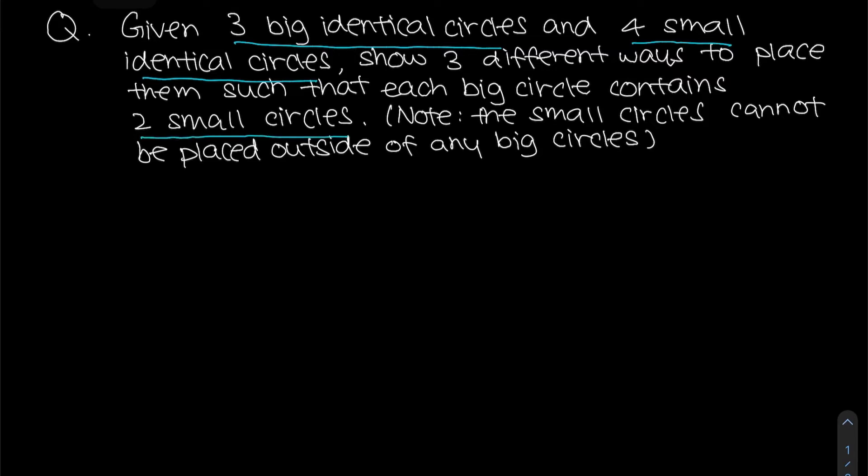So if you were to think about it normally, if let's say I have three circles like that, for example, and each of them have two small circles inside, you will notice that I have actually exceeded the number of small circles that I can have in total. I should only have four small circles, but in this case, I have a total of six small circles.